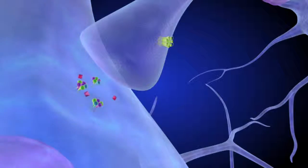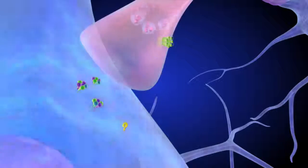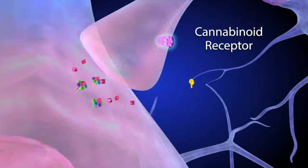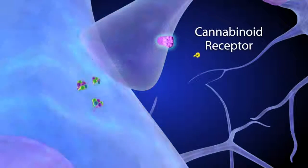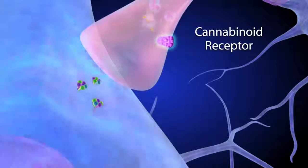Depending on its current level of activity, the presynaptic dopamine neuron can produce endocannabinoid molecules. These molecules bind to cannabinoid receptors on the adjacent GABA neuron, reducing the amount of GABA it releases.